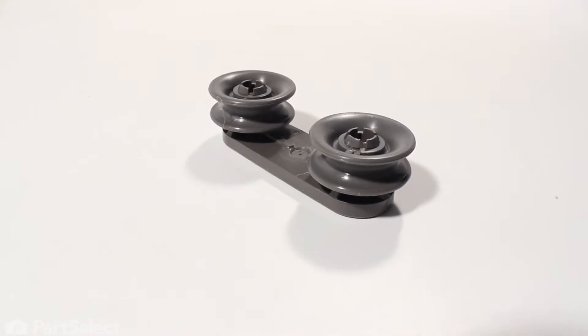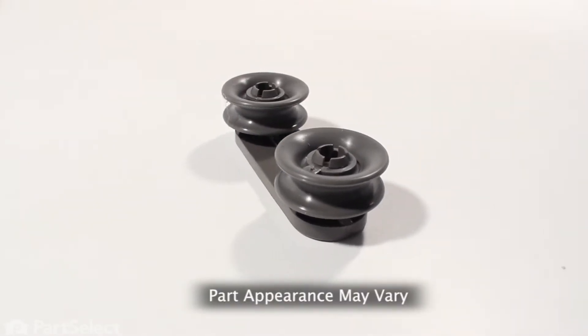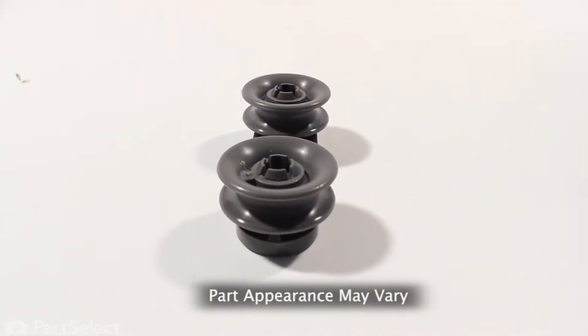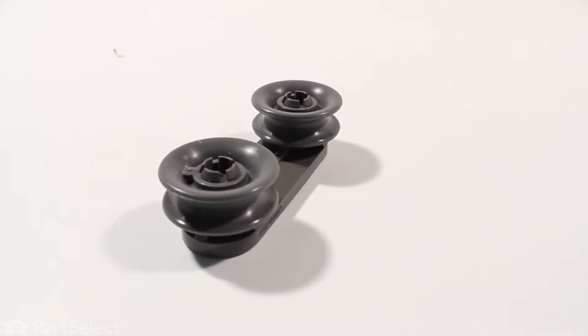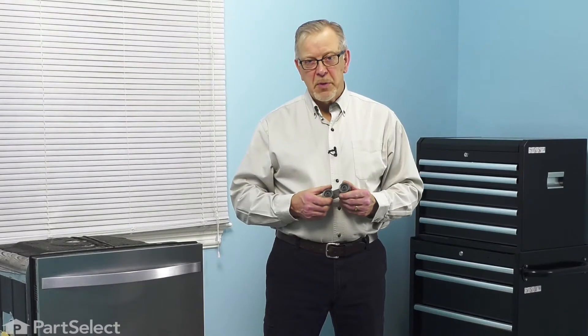Hi, it's Steve. Today we'd like to show you how to change the tub wheel assembly on your dishwasher. Over time, the tub wheel may become brittle from heat and harsh chemicals and crack, therefore not allowing your upper rack to roll smoothly. It's a really easy job to change. Let me show you how we do it.